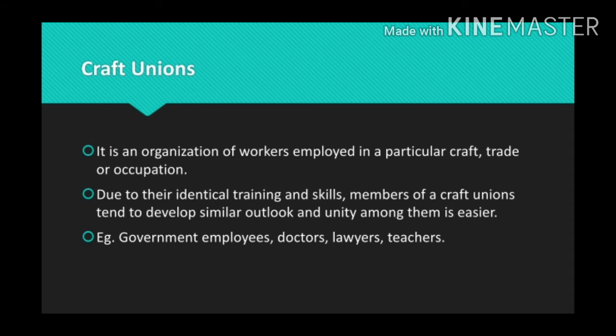However, a craft union lacks a clear perspective of the working class as a whole. Due to different agreements in different crafts, joint action by workers belonging to different crafts is not easy. Craft unions are horizontal in character because their members belong to a single process or group of processes. In India, craft unions are found largely among white-collar workers and professionals such as government employees, bank employees, doctors, lawyers, and teachers. There are very few craft unions of industrial workers.